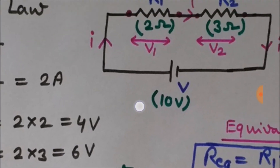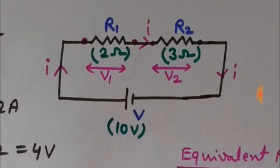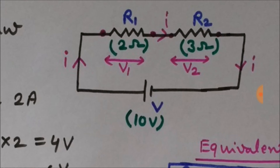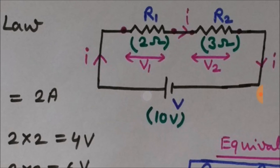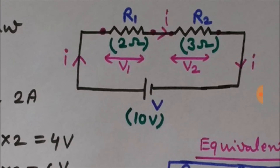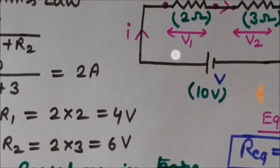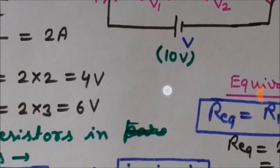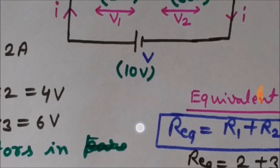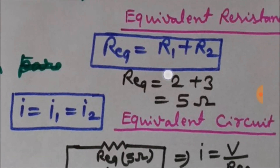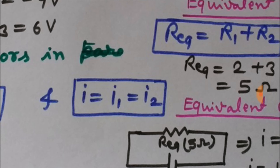We can also calculate V1 and V2 — the voltage drops across R1 and R2. V1 equals R1 multiplied by the current: 2 multiplied by 2 equals 4 volts. To calculate V2, it is R2 multiplied by the current: 3 multiplied by 2 equals 6 volts. So 4 and 6 are the voltage drops, and 6 plus 4 equals 10 volts, confirming the total.